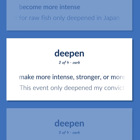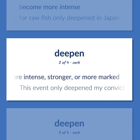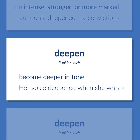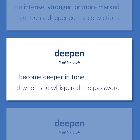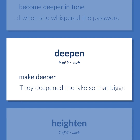Deepen: Make more intense, stronger, or more marked — this event only deepened my convictions. Become deeper in tone — her voice deepened when she whispered the password. Make deeper — they deepened the lake so that bigger pleasure boats could use it.